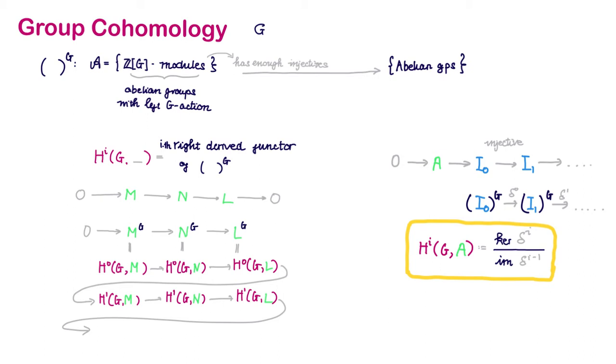Because it is well known that the category of modules over any fixed ring has enough injectives. That is, every R module has an injected resolution. So for all G module A, we can always find an injected resolution for A, and thus define the i-th cohomology groups of G with coefficient in A.